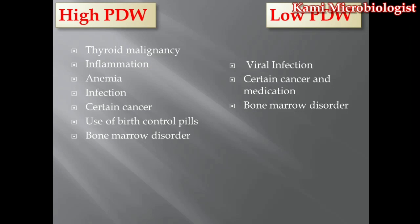High PDW can also be caused by anemia, in which RBCs get destroyed or their count gets low. Due to this, the PDW will get high. In the case of bacterial infection, white blood cells get high, causing platelets to also get high, which results in high PDW.